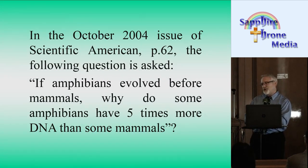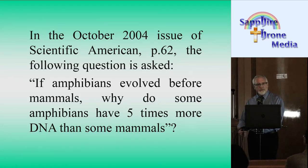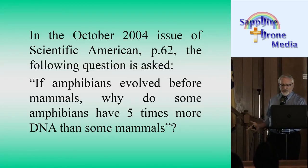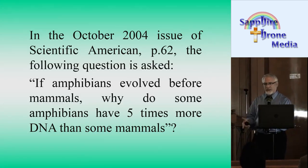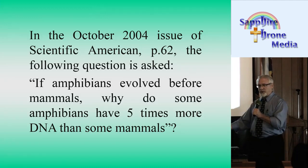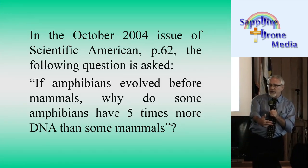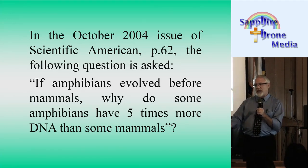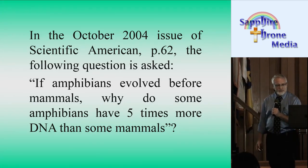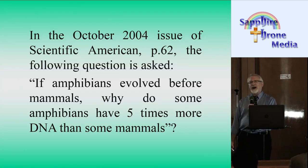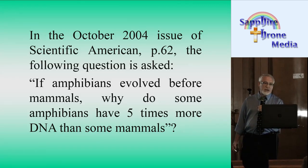In the October 2004 issue of Scientific American, page 62, the following question is asked: If amphibians evolved before mammals — because the theory is that life first formed in the oceans or seas and then crawled out onto the earth and became a mammal — if amphibians evolved before mammals, why do some amphibians have five times the DNA that some mammals do?